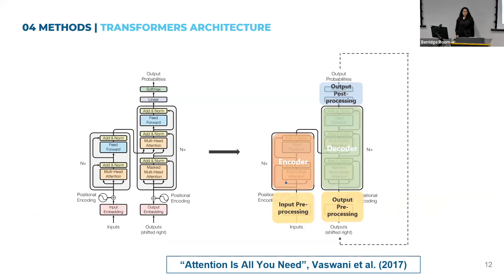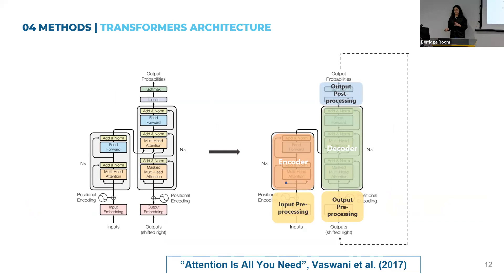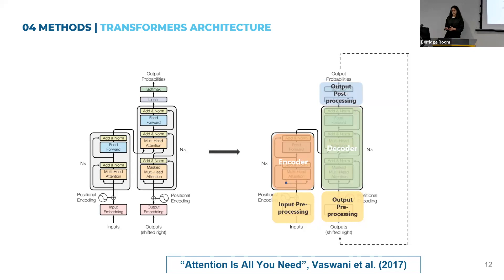Transformers were first introduced in the paper 'Attention Is All You Need.' Here is the general architecture. We can see two blocks: the encoder block, which receives the input and creates a representation of it, and then the decoder, which receives the encoder representation and creates a target sequence. There are models that only have the encoder part, others that only have the decoder, and the ones that have both are sequence-to-sequence models.